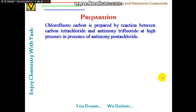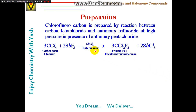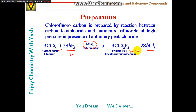Chlorofluorocarbons are prepared by the Swarts reaction: carbon tetrachloride reacts with antimony trifluoride (SbF₃) at high pressure in the presence of antimony pentachloride (SbCl₅) as catalyst. Fluorine substitutes chlorine, giving CCl₂F₂ (dichlorodifluoromethane/Freon-12) and SbCl₃.